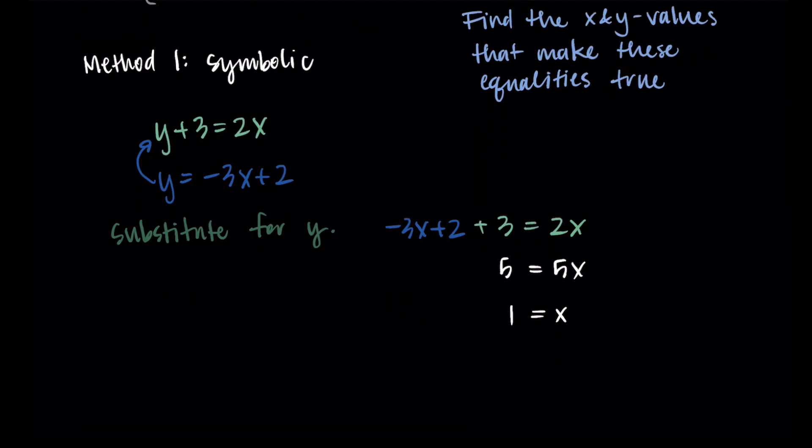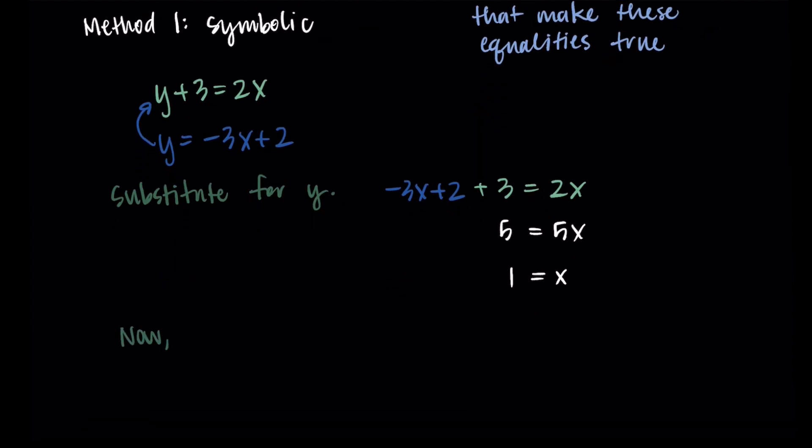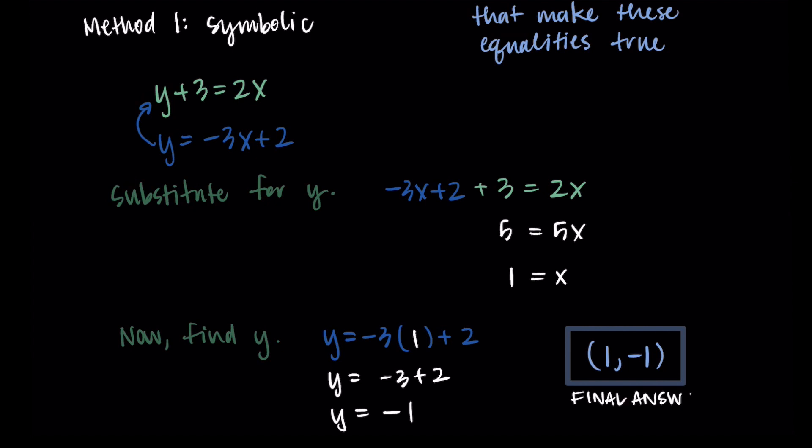Okay, we found one of my answers, X equals one. Now we need to find the corresponding Y value that goes with it. To do that, we can take either equation, and we just need to plug in one for X. I'm going to do the Y equals negative three X plus two and replace X with one. So I'm doing negative three times one, that's negative three, adding two to that is negative one. So my Y value is negative one, and together these make my final answer. The point one negative one is the solution to this system.